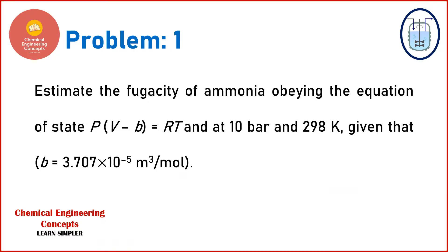Problem number one: we have to estimate the fugacity of ammonia, which obeys the equation of state p(v - b) = RT. We have to determine the fugacity at 10 bar and 298 Kelvin. The value of constant b is 3.707 × 10⁻⁵ m³/mol. You can pause the video here and try to solve it on your own, especially if you are preparing for a competitive exam or semester exam.